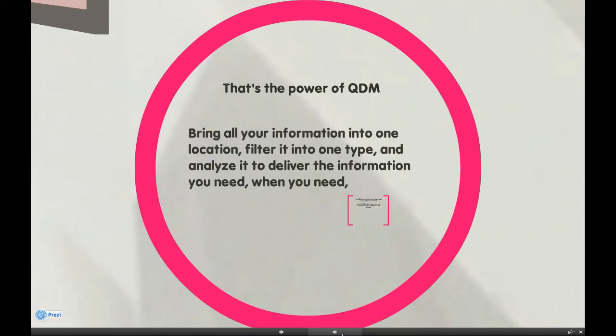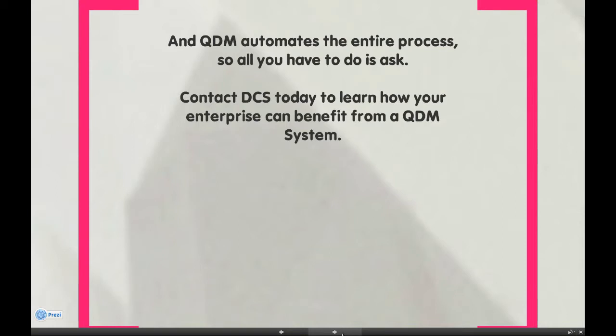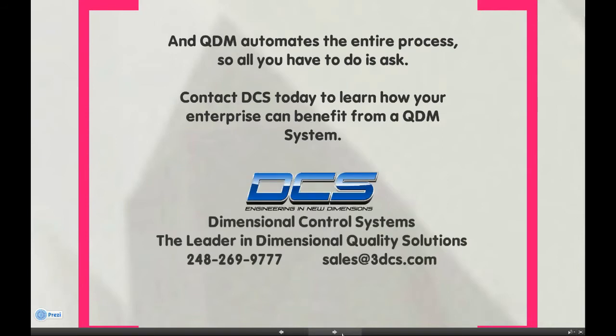Bring all your information into one location, filter it into one type, and analyze it to deliver the information you need, when you need it, in seconds. When QDM automates the entire process, all you have to do is ask. Contact DCS today to learn how your enterprise can benefit from a QDM system. Dimensional Control Systems — the leader in dimensional quality solutions.